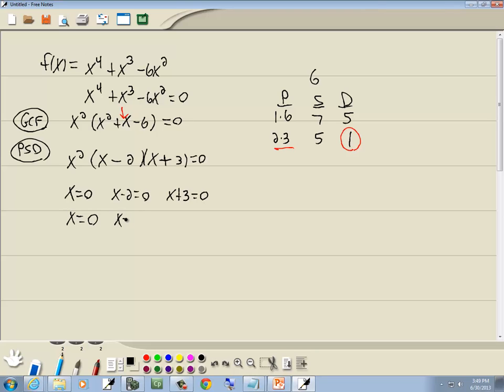So we get x equals 0, 2, and negative 3. And those are our zeros.